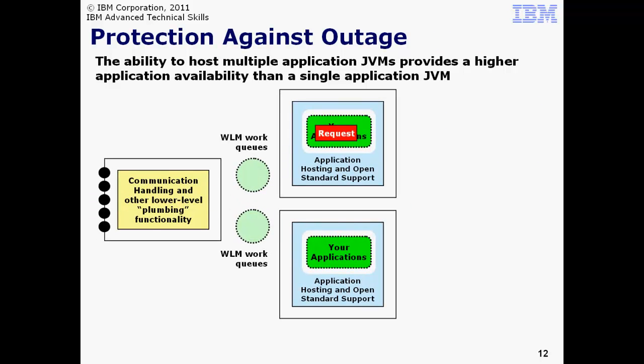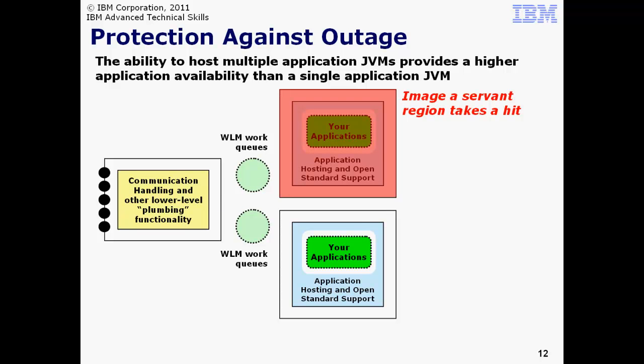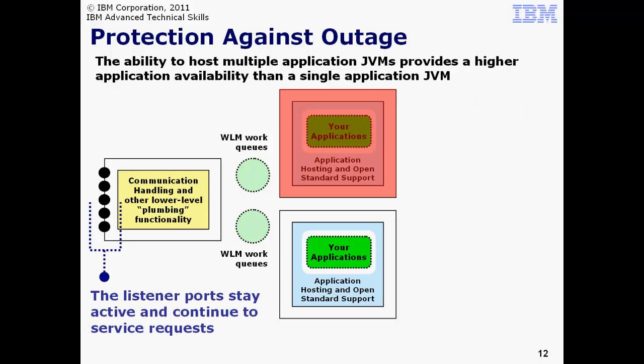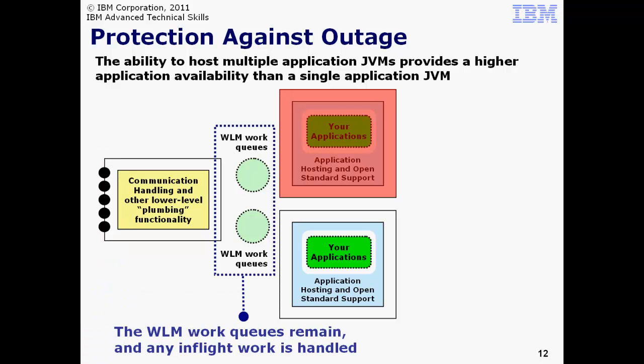Suppose we have a controller with two Servant regions. ZWM maintains a set of work queues for each Servant. To the outside world, this looks like a single server since there is the single set of listener ports out front. Behind the controller, there are in fact two application JVMs available to service the requests. By default, work will flow to only one of the Servant regions provided the ZWM goals are being met. The other JVM is active, idle, and ready to take work immediately if needed. Imagine the active Servant region takes a hit and goes away. The controller remains active and therefore the listener ports remain active. The outside world sees no disruption. Existing TCP connections are not lost. The ZWM work queue mechanism is always present between the controller and whatever Servants remain. No work in the failing Servant's work queue is lost. It's handled by the surviving Servant.